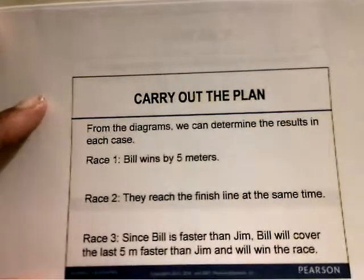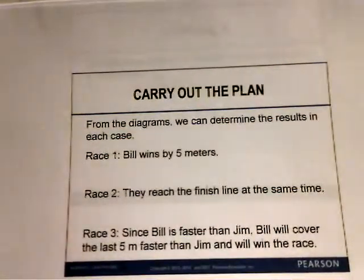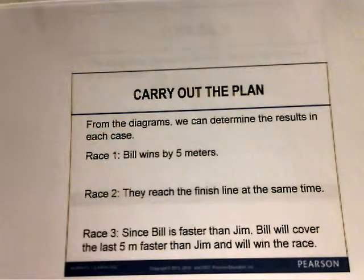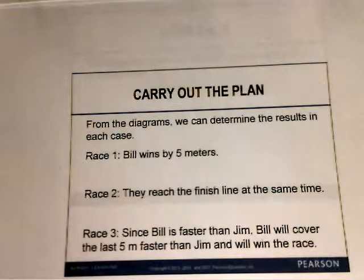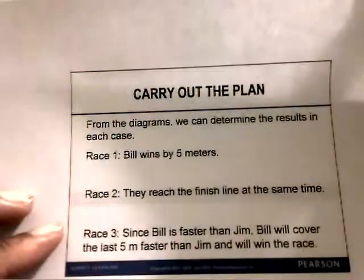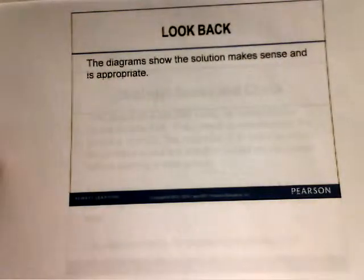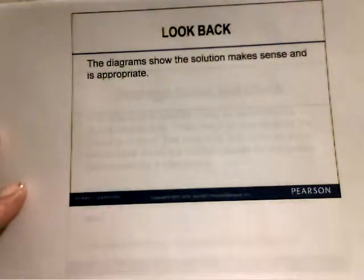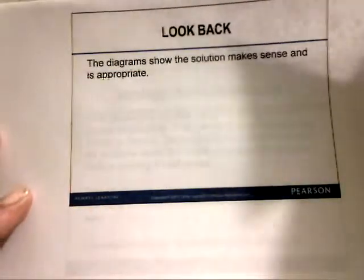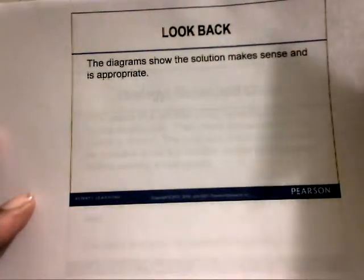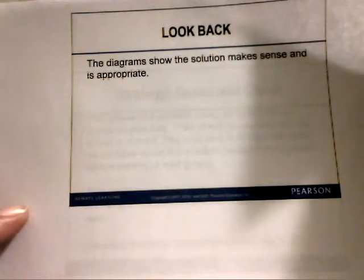From those diagrams, we can determine the results in each case. In race number one, Bill will win by five meters. In race number two, they reach the finish line at the same time. In race three, since Bill is faster than Jim, Bill will cover the last five meters faster than Jim and will win the race. When you look back, you want to make sure the answer does make sense.